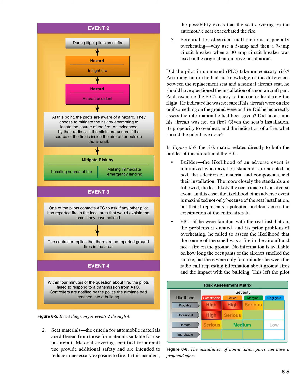Third, the potential for electrical malfunctions, especially overheating. Why use a 5-amp and then a 7-amp circuit breaker when a 30-amp circuit breaker was used in the original automotive installation? Did the pilot in command (PIC) take unnecessary risk? Assuming he had no knowledge of the differences between the replacement seat and a normal aircraft seat, he should have questioned the installation of a non-aircraft part. Examine the PIC's query to the controller during the flight — he indicated he was not sure if his aircraft was on fire or if something on the ground was on fire. Did he incorrectly assess the information he had been given?